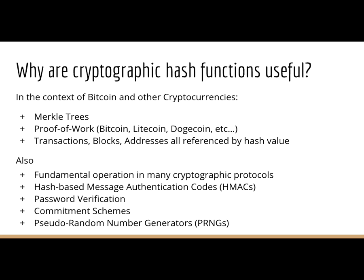Why are cryptographic hash functions useful? Since we're in a cryptocurrency class: we've got Merkle trees, proof of work — cryptographic hash functions make really good puzzle mechanics for proof of work. Transaction blocks and addresses are all referenced by hash value. You can think of it like a pointer pointing to something with a value that hashes to the hash value.